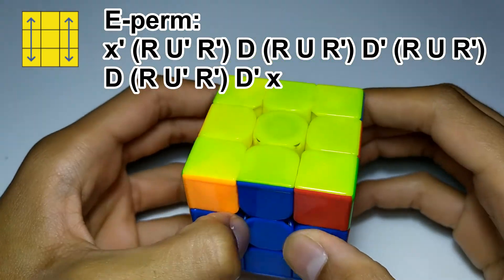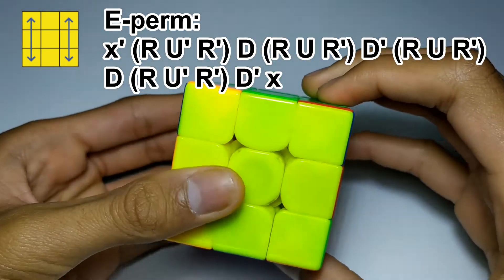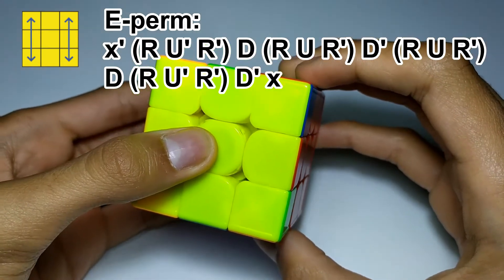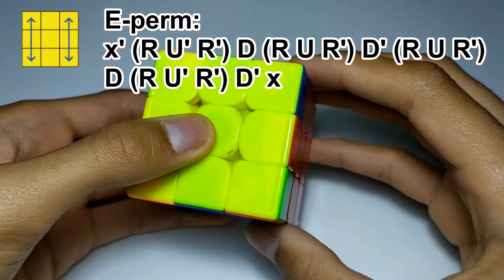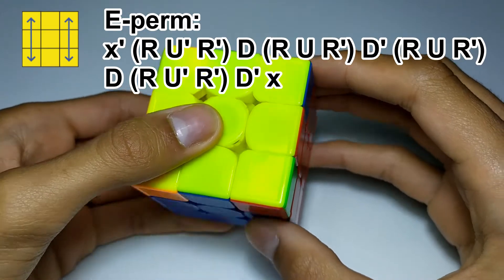So the algorithm is really just a set of R, a U move, R' and then a D move four times.